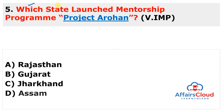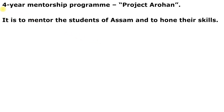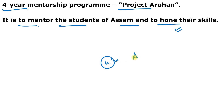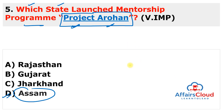Which state launched the mentorship program known as Project Arohan? The answer is Assam — option D. Chief Minister Himanta Biswa Sarma launched Project Arohan, a four-year mentorship program to mentor students of Assam and hone their skills. Sarma met with Anita Ranjan, currently the CEO of Tata Strive Program — the skill development initiative of Tata Trust — to seek cooperation for Project Arohan. Assam's Governor is Jagdish Mukhi, who also holds additional charge of Nagaland.